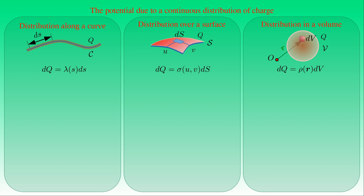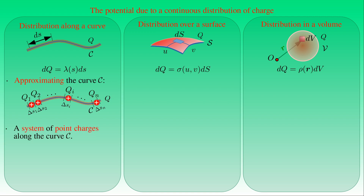For charge distributed along curve C, we approximate with N line segments of lengths Δs1, Δs2, …, ΔsN — each much smaller than the total curve length. The electric charge along each segment i is approximated by a point charge qi at the midpoint of that segment, giving a system of point charges q1, q2, …, qN along the segments approximating curve C.